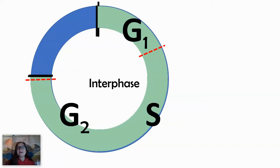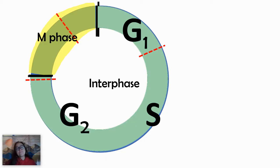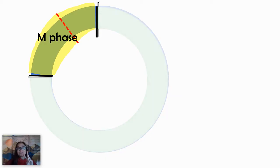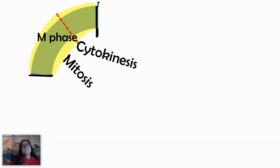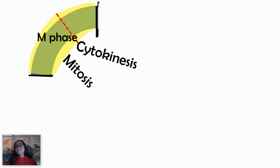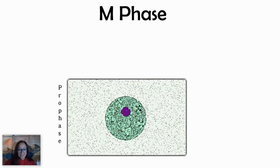In this video, we're going to look at M-phase or mitosis. In M-phase, there are actually two things that happen: mitosis as well as cytokinesis. Now, if you are talking about producing gametes like sperm or egg, then it would be meiosis followed by cytokinesis. But this video will focus on mitosis, not meiosis.